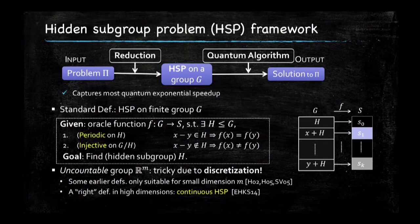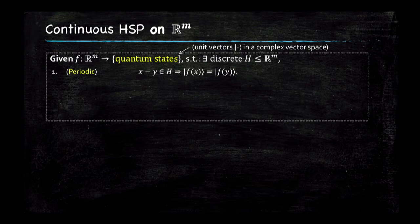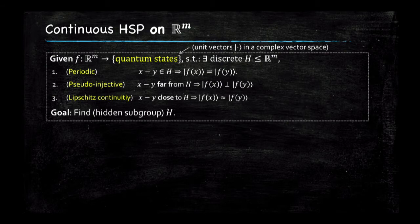Here's how it works. You want a function from R^m to quantum states that hides your subgroup H, whose knowledge will ultimately give you the solution to your problem. Essentially, when you have x and y such that x ≡ y mod H, you should get the same quantum states. But you need extra conditions: when you take states arising from points that are very close together in R^m, you get quantum states that are very close, and when the points are far apart, the quantum states are close to orthogonal.